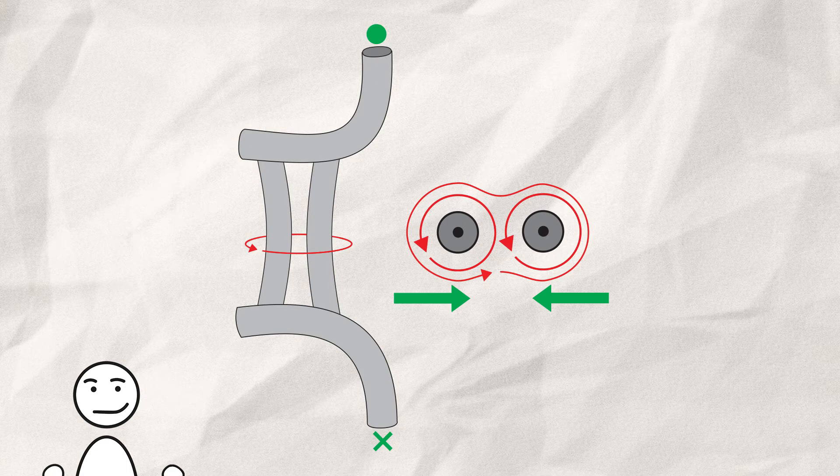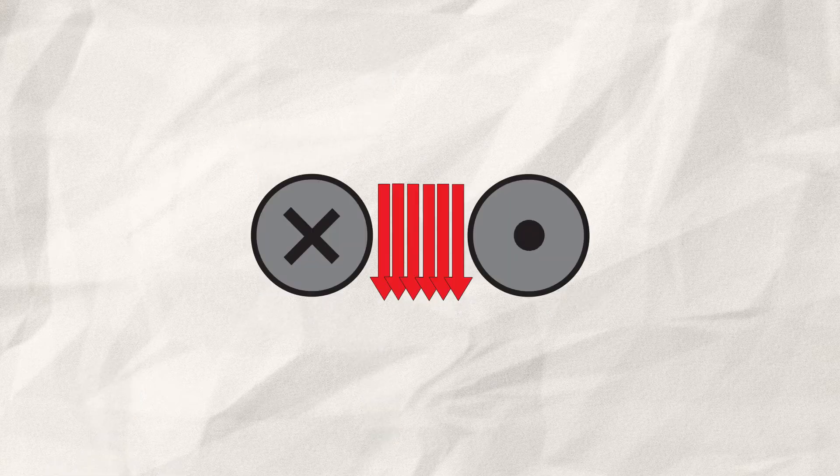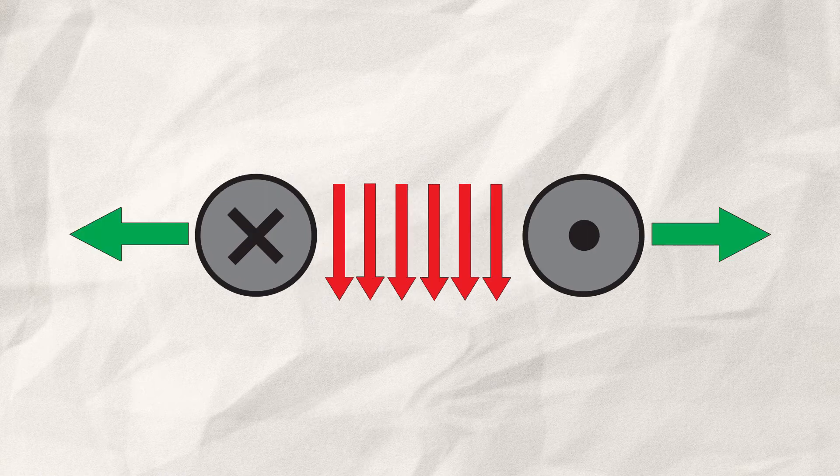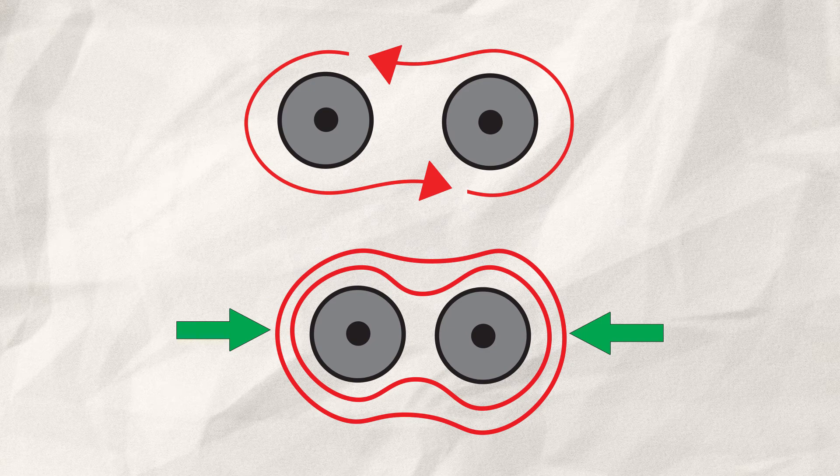An easy way to think about it is imagining the flux lines as stretched out rubber bands. If you bunch a lot of them between two wires, the wires will eventually be pushed apart. Otherwise, on the outside, they will contract and pull the wires together.